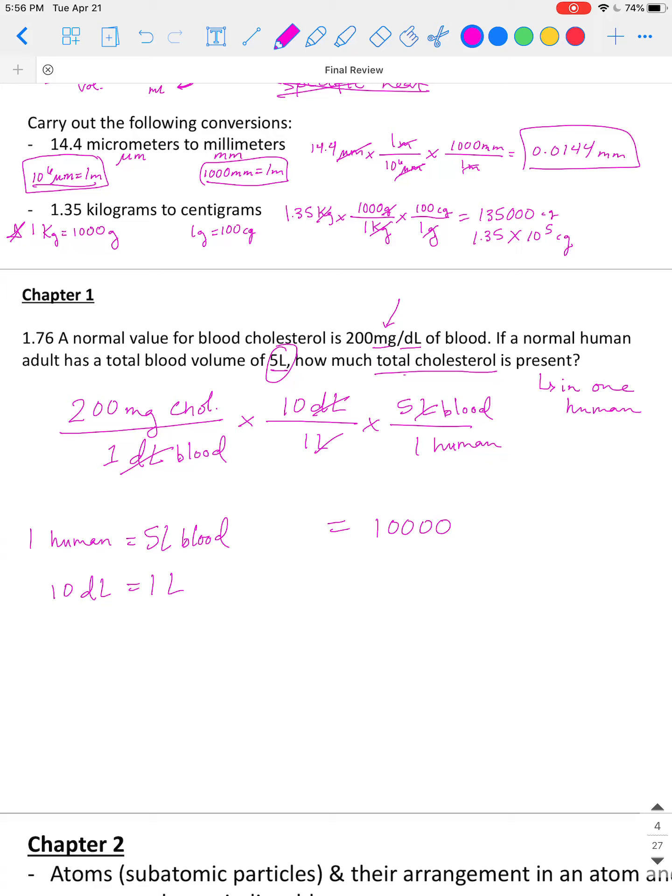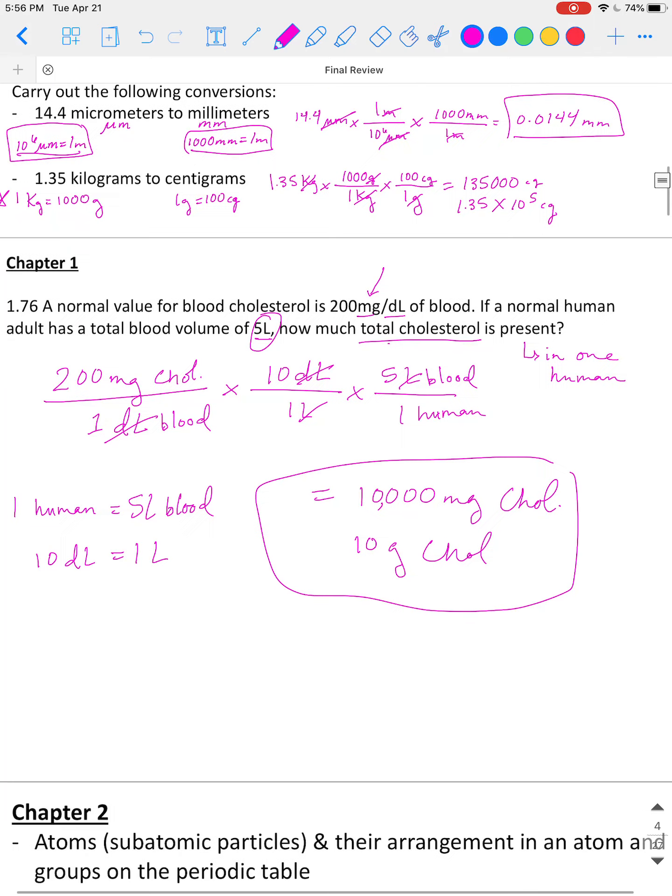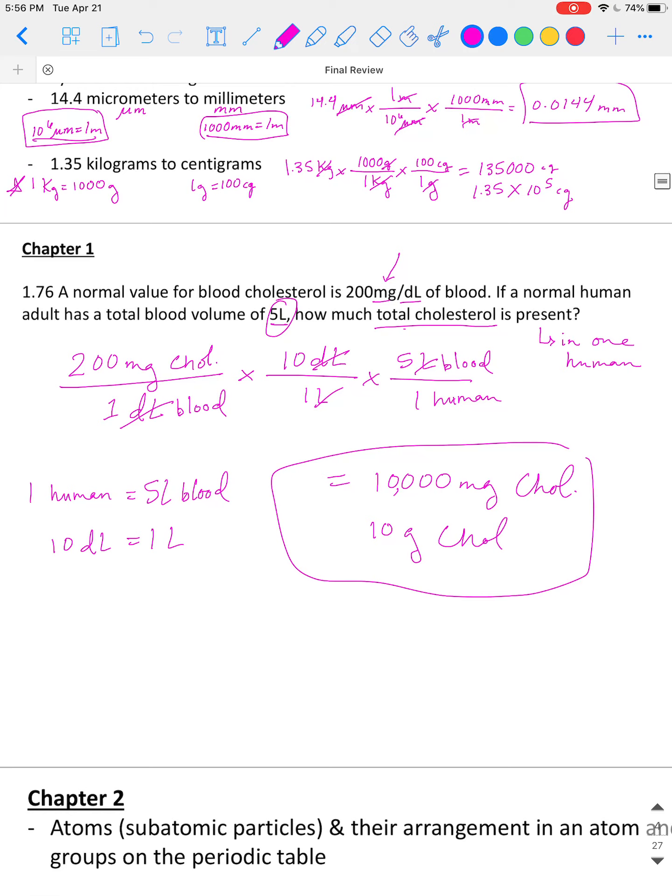So deciliters cancel, liters cancel, and what you would get is 200 times 5, we should get 10,000 milligrams. And that's fine, the question doesn't specify what units we should put for cholesterol. We can leave it in milligrams. You could convert it to grams. You could say 10 grams if you want of cholesterol. So that would be our answer.